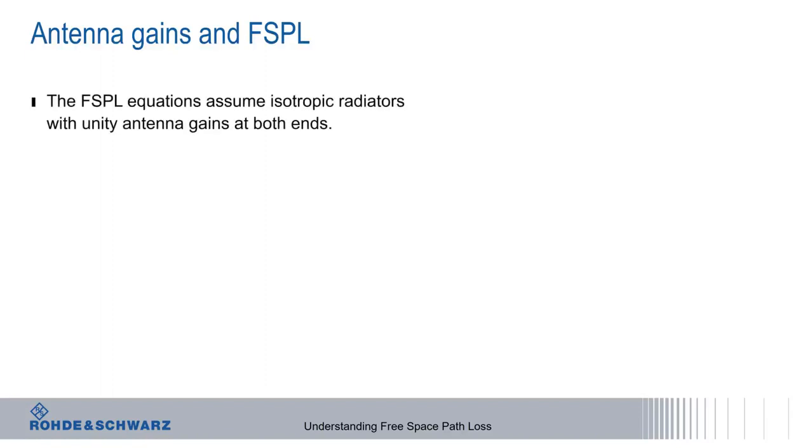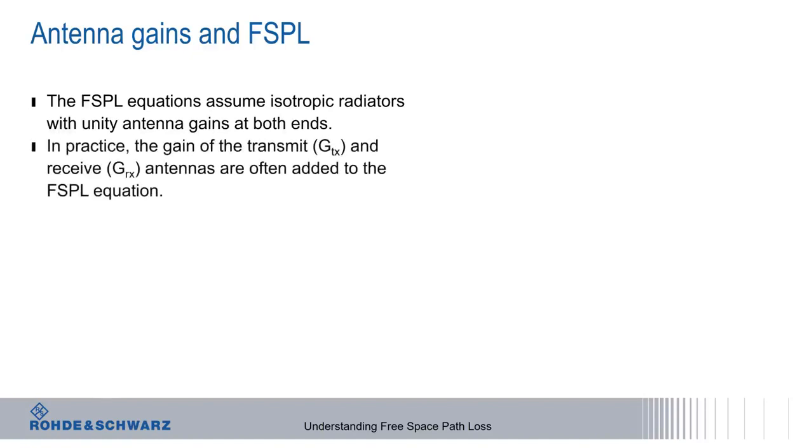Recall that the basic free space path loss equations assume isotropic radiators on both ends, that is, antennas with essentially zero gain. Isotropic antennas are, however, a mostly theoretical construct and aren't normally found in real-world applications. For this reason, the free space path loss equation is often modified to include the gain of both the transmitting and receiving antennas.